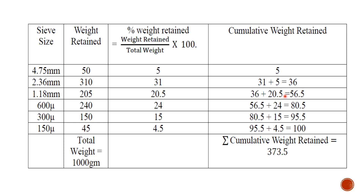Then move to the cumulative weight retain column. In the first row, write the value of percentage weight retain as it is — which is 5. For the second row, add 5 and 31 to get 36. Then 36 plus 20.5 equals 56.5. Then 56.5 plus 24 equals 80.5. Then 80.5 plus 15 equals 95.5. And 95.5 plus 4.5 equals 100.